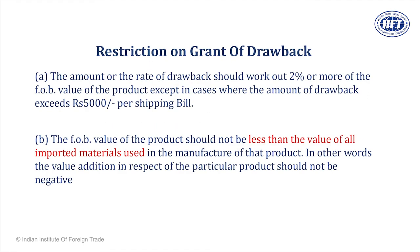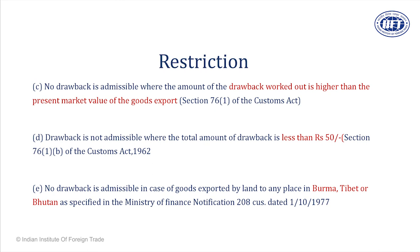There are certain restrictions on drawback claims, and these keep changing as trade is a very dynamic subject. If your claim is less than 5,000 rupees and where the drawback rates are less than 2%, claims are usually not processed. In case the FOB value of your exportable goods is less than the CIF value of inputs used — meaning more funds going out of India and less FOB value being realized — no drawback is admissible. Where the amount of drawback is higher than the present market value (as in Section 74), no drawback is given. Less than 500 rupees: claim is not processed. Goods going by land route to Burma, Tibet, and Bhutan are not processed.